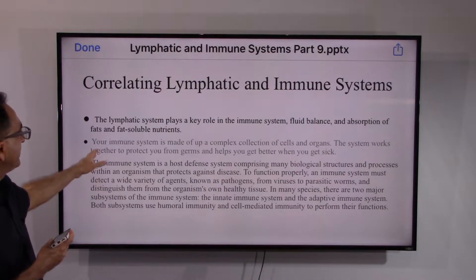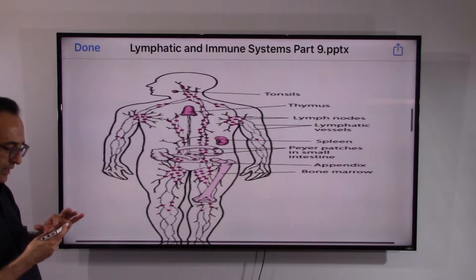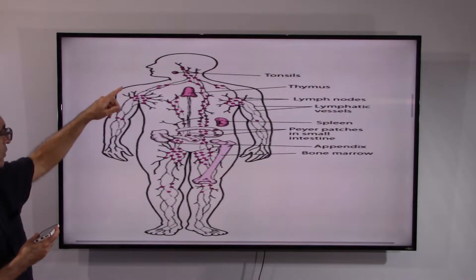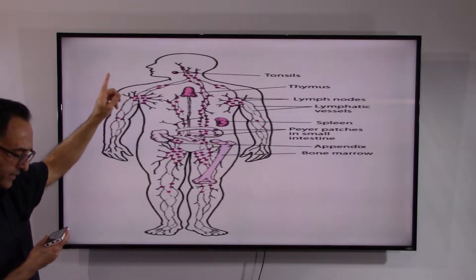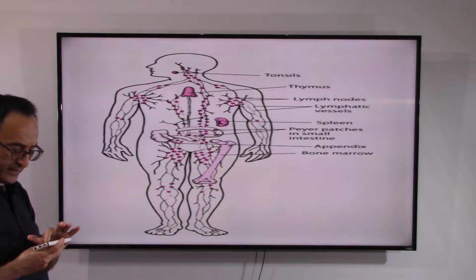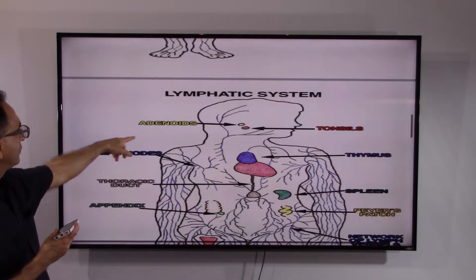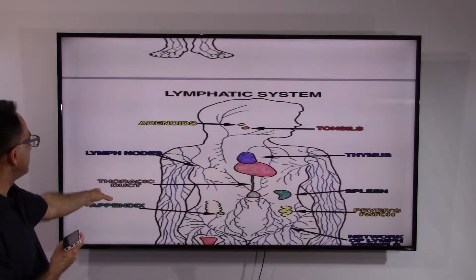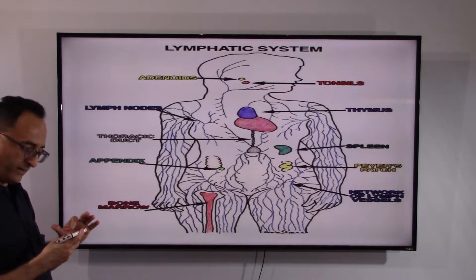Simply speaking, the immune system is our defense. Looking at the structures, from tonsils to bone marrow, thymus, lymph nodes, lymphatic vessels, spleen, appendix — they all play a role in both the lymphatic and immune systems. Adenoids were missing from that slide, so another slide shows adenoids and tonsils as the starting point. The thoracic duct is nicely portrayed here, color-coded with various organs and systems.